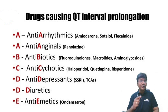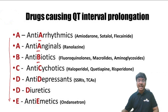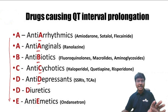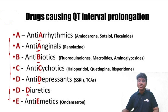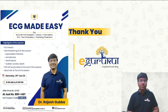A mnemonic for drugs causing long QT is ABCDE: A = anti-arrhythmic drugs and anti-anginals; B = antibiotics; C = antipsychotics; D = antidepressants and diuretics; E = anti-emetics. This helps you remember the drug classes that can cause a prolonged QT interval.